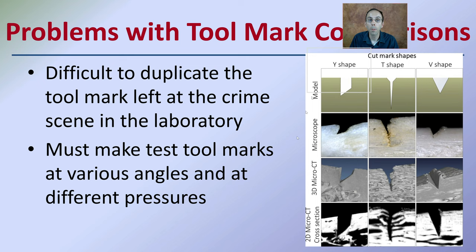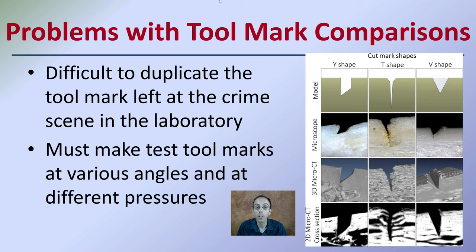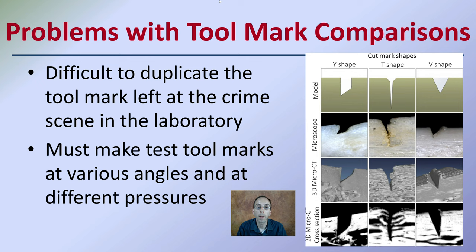Problems with tool mark comparisons are that they can be difficult to duplicate. The examiner must make test marks at various angles and different pressures to see if a match can be made. There are also many different cut mark shapes — Y cuts, T cuts, and V shapes — and it can be hard to recreate all those exact factors in a lab. This is why multiple laceration marks need to be made in the lab to compare to what was found at the crime scene.